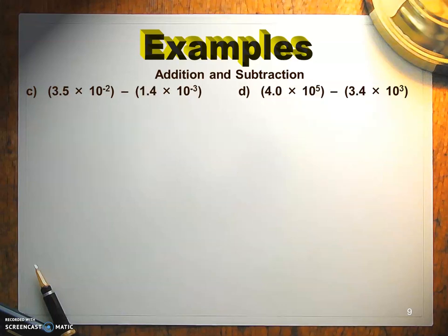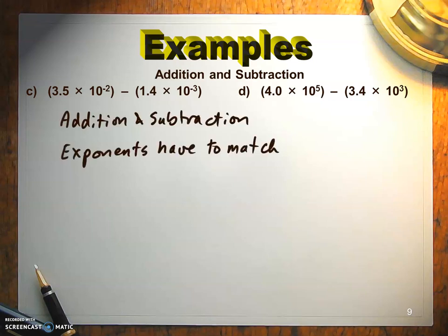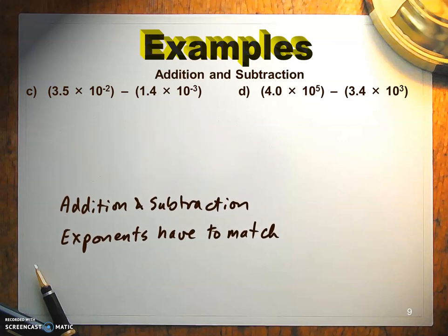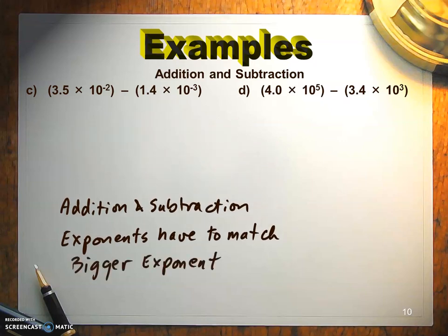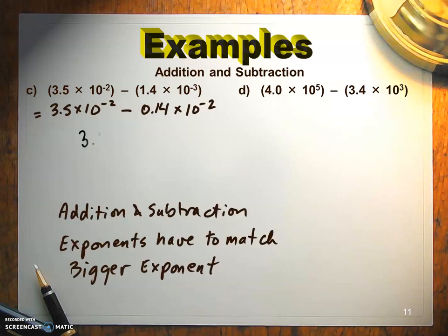So now let's talk about the one where the exponents don't match. For addition and subtraction, the exponents have to match. So my strongest recommendation, because it saves you an extra step at the end most of the time, is to make both of the exponents match the bigger one. So in this case, 10 to the negative 2. Keep that one the same, and you're going to change the other one. So what do you do to make that 10 to the negative 3 into 10 to the negative 2? The number has to balance out. So the exponent is going up by 1, so in the coefficient, it's going to have to go down one decimal place, one decimal place smaller. Now you subtract those two coefficients, and you keep the power of 10.